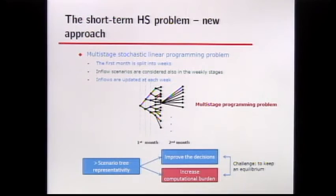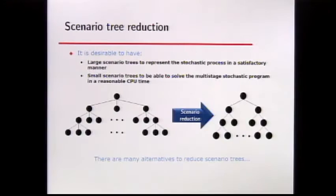By constructing a scenario tree where for each node in the second month there are also branching openings, we move to the multistage program setting. We get a better representation of uncertainty by considering a bigger tree, which can improve decisions and decrease the volatility of spot prices. However, this increases the computational effort, so the aim is to find an equilibrium between numerical tractability and representation of uncertainty — achieved through scenario reduction techniques.